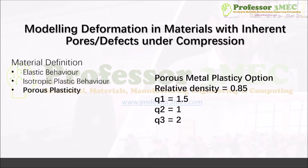The third part is porous plasticity. When there are inherent voids or defects due to manufacturing, the volume constancy assumption is no longer valid because voids can deform under volumetric loading — they can collapse or expand. Voids can nucleate, grow, and coalesce, which is a failure mode. In compression, we have void closure — voids try to close, improving density.